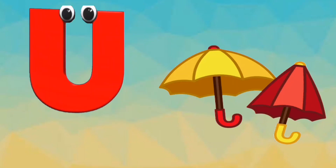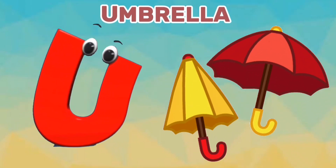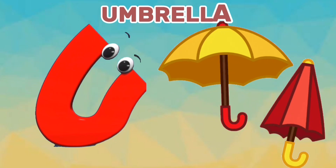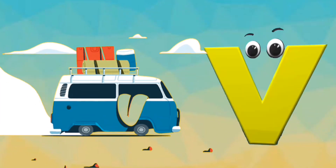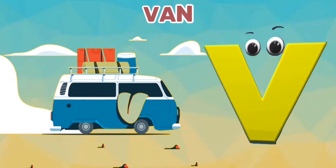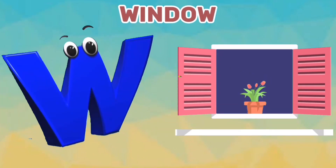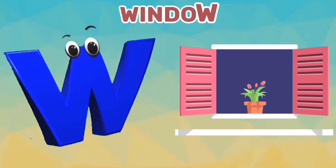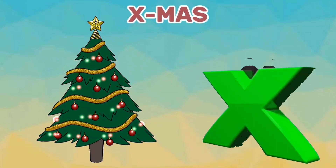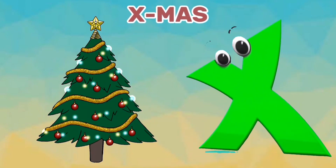U is for Umbrella. U, U. Umbrella. V is for Van. V, V. Van. W is for Window. W, W. Window. X is for Xmas. X, X. Xmas.